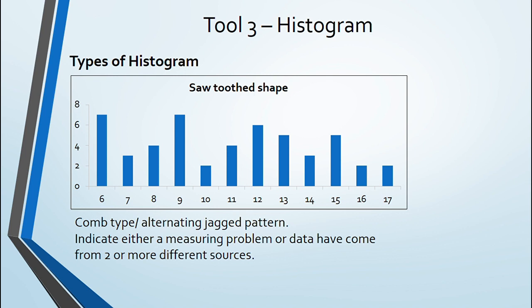Final one is saw-toothed shape histogram. It has alternating jagged pattern. It indicates that either there is a measurement error or data have come from multiple sources. That is all for histogram.